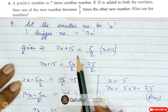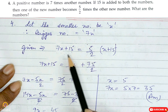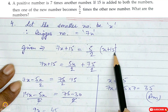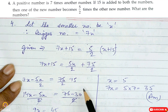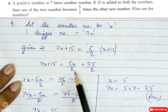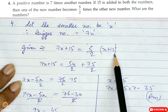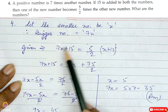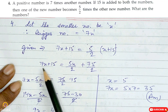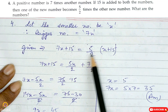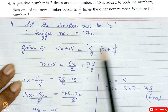If 15 is added to both the numbers — that is 7x as well as x — so 7x plus 15 and x plus 15. One of the new numbers becomes 5/2 times the other. So 7x plus 15 is equal to (5/2)(x plus 15), which gives 5x/2 plus 75/2 after multiplying.